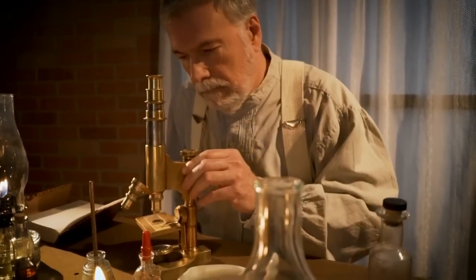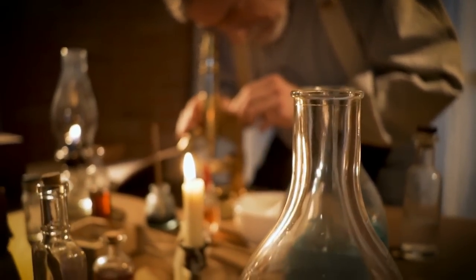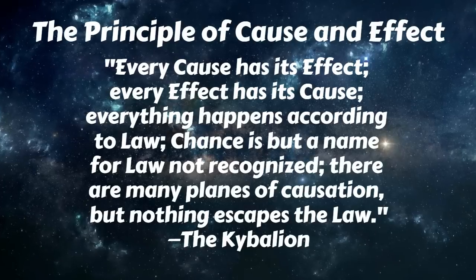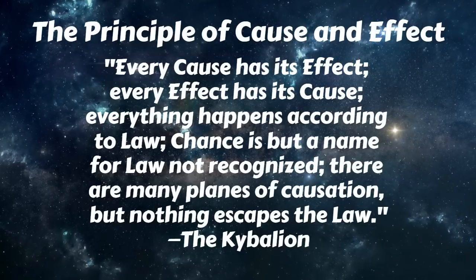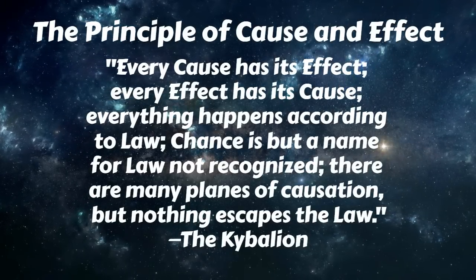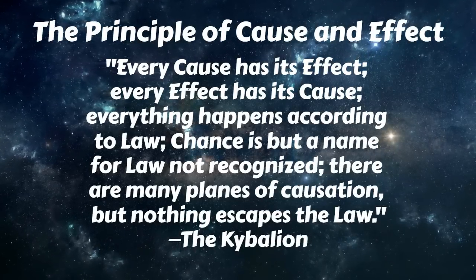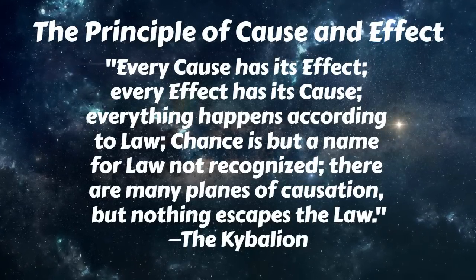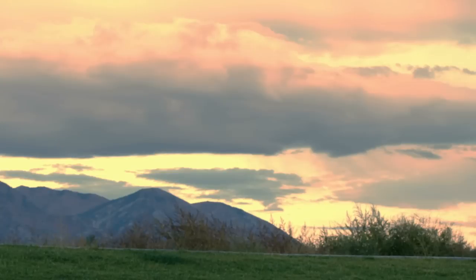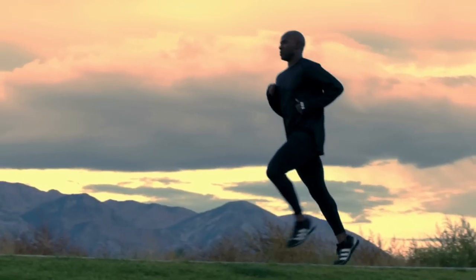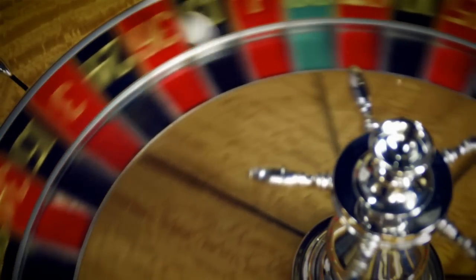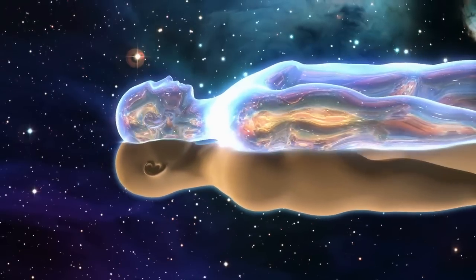The Principle of Cause and Effect. Every cause has its effect, every effect has its cause. Everything happens in accordance to law. Chance is but a name for law not recognized. There are many planes of causation, but nothing escapes the law. This principle embodies the fact that there is a cause for every effect and an effect from every cause. It explains that everything happens according to law. Nothing ever merely happens. There is no such thing as chance. While there are various planes of cause and effect, the higher planes dominating the lower planes, yet nothing ever entirely escapes the law.